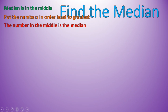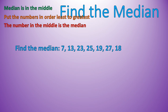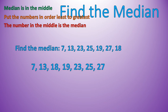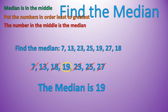Now it is your turn. I want you to find the median of this list of numbers. Pause the video and follow the steps in the upper left-hand corner. Our first step is to put them in order from least to greatest, and then we move our way into the center. The median is 19. The most common step to miss is putting them in order from least to greatest.